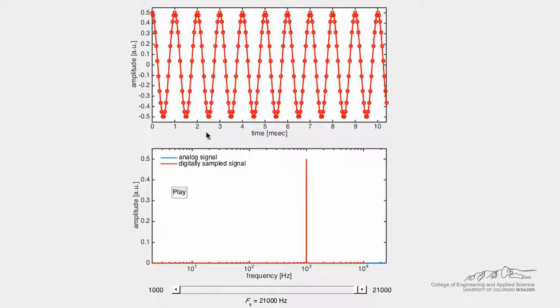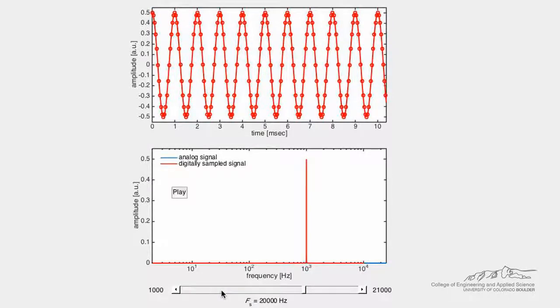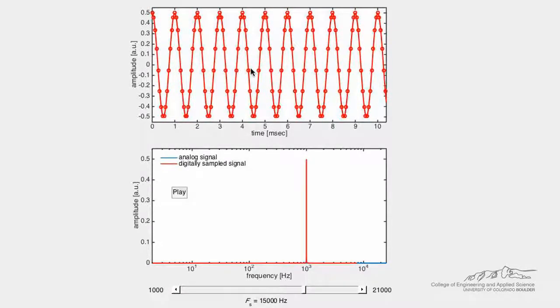This demo shows the effect of aliasing. An analog signal in blue is generated and sampled at a sampling frequency of Fs, which we can control with the slider bar. The digital representation of the analog signal is shown in red.